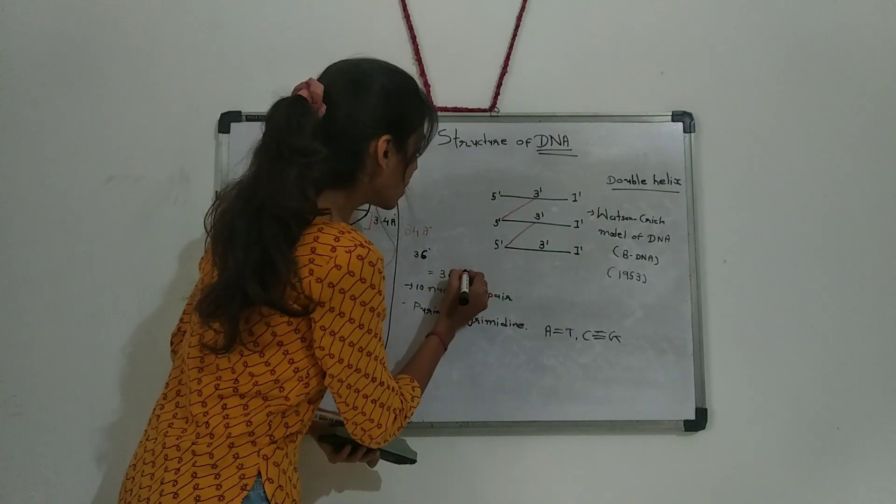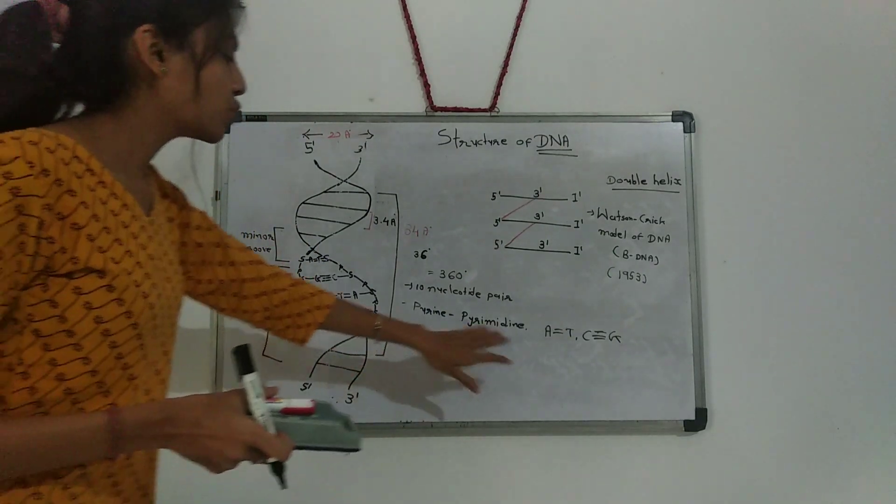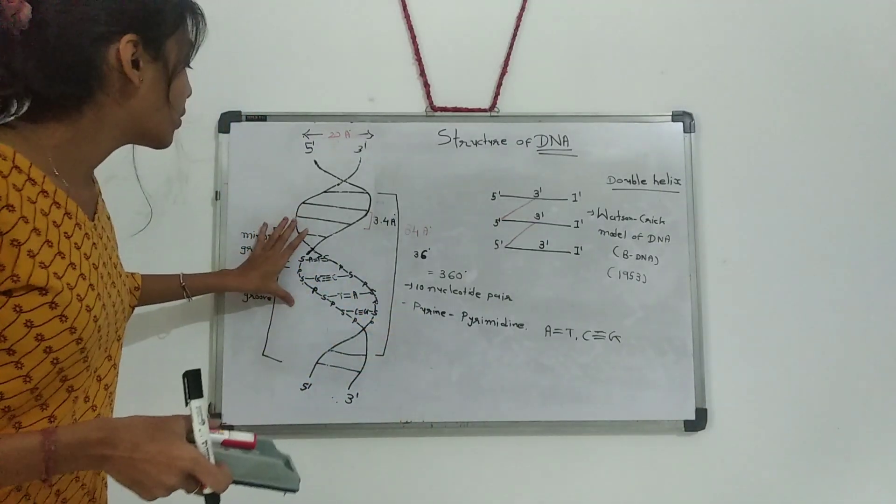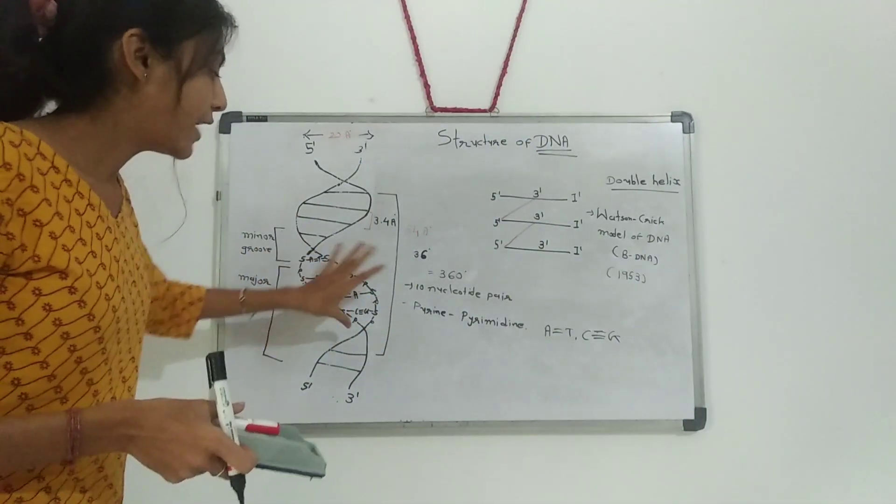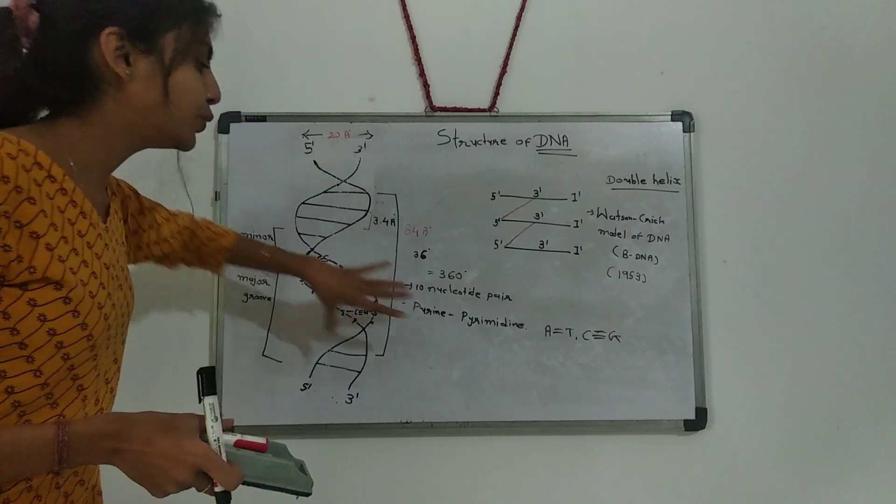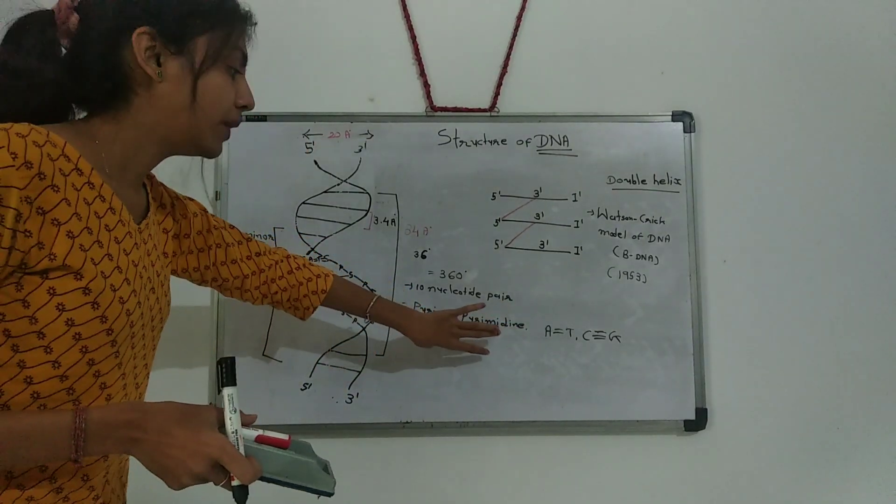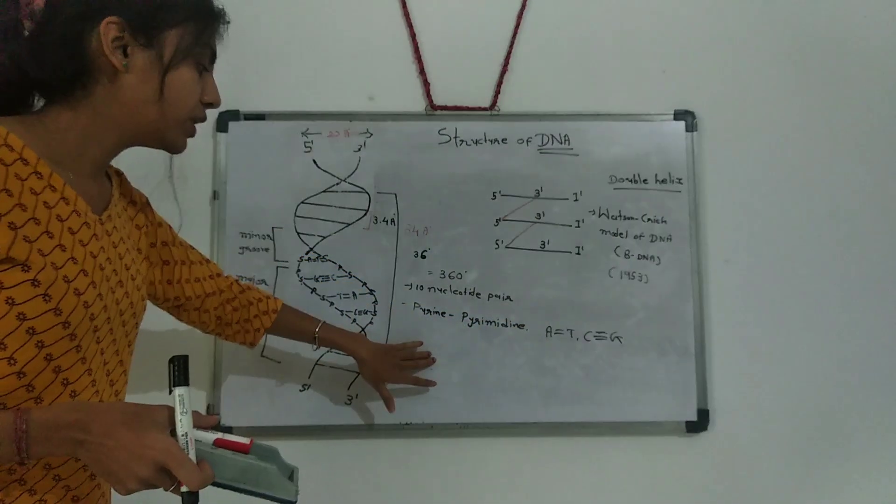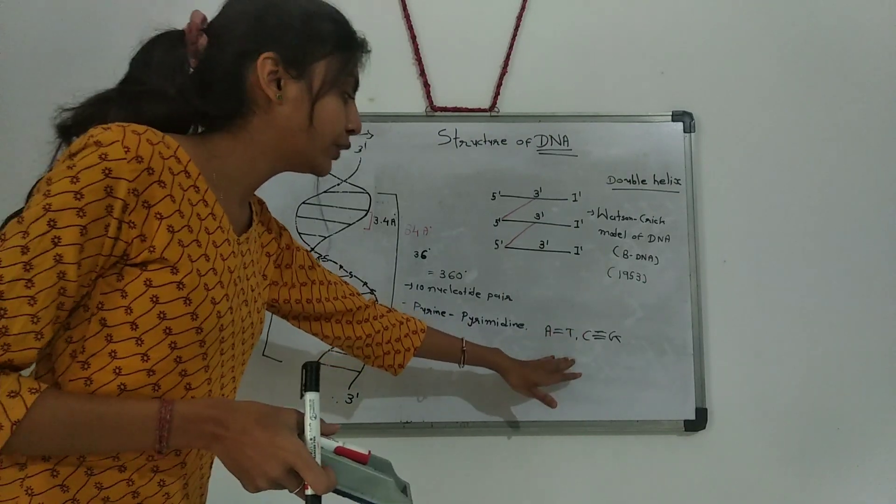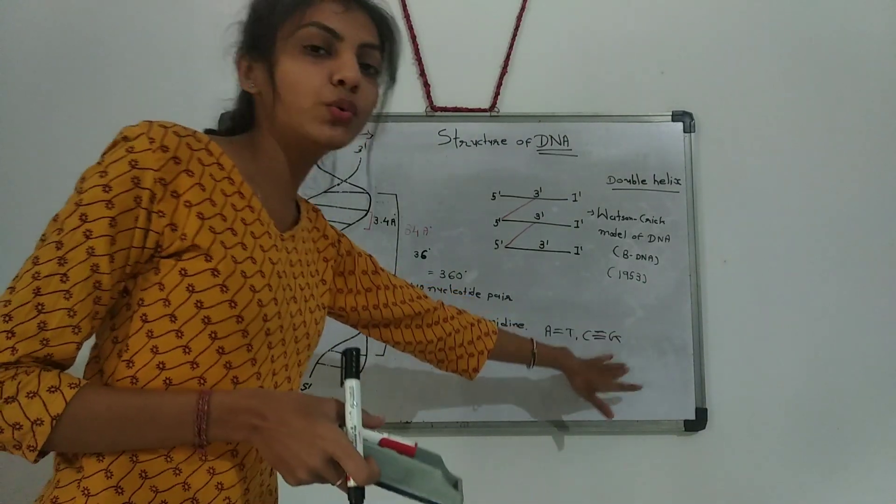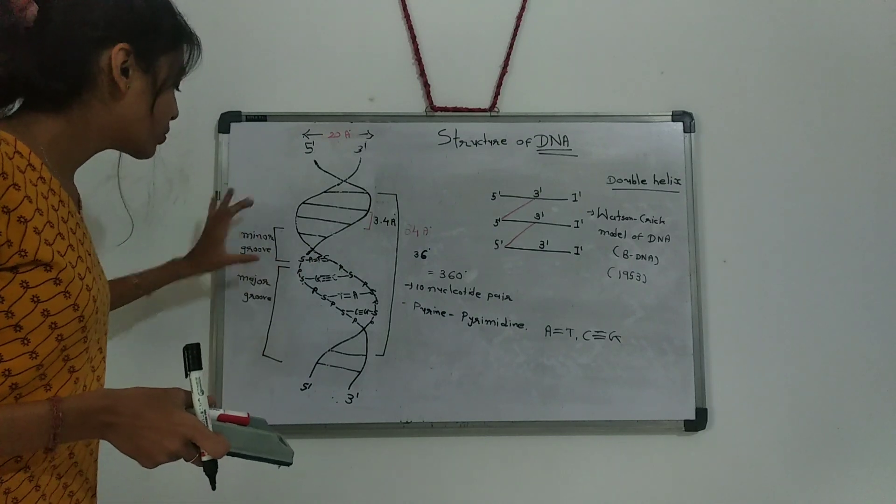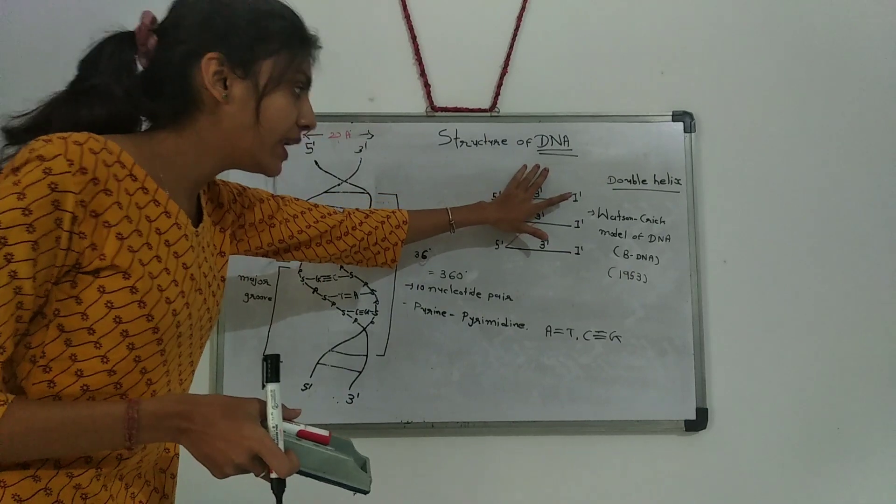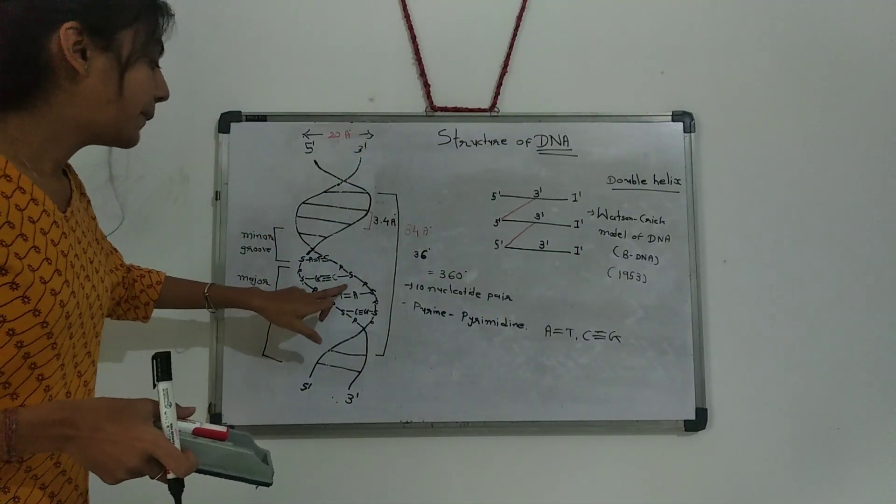The deoxyribophosphate backbone is hydrophilic throughout on the exterior. The bases are hydrophobic on the interior. These two complementary strands are connected by hydrogen bonds. Adenine with thymine forms two hydrogen bonds and cytosine with guanine forms three hydrogen bonds.